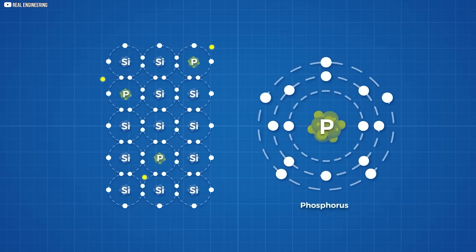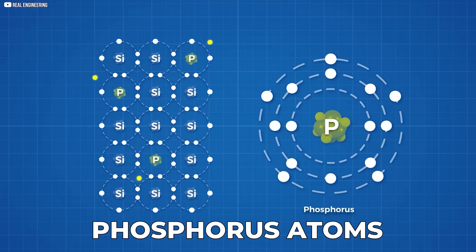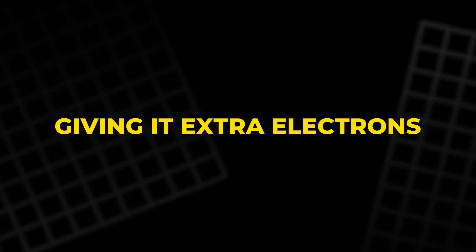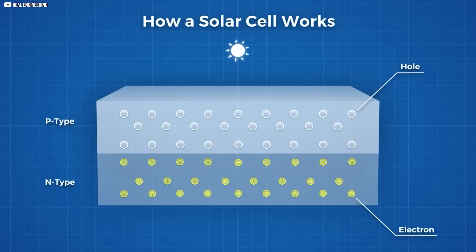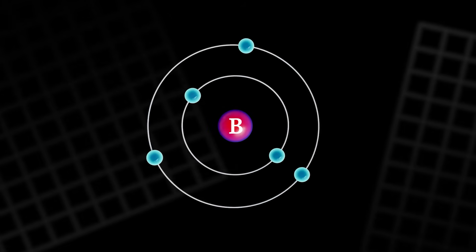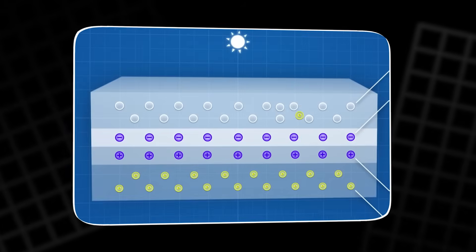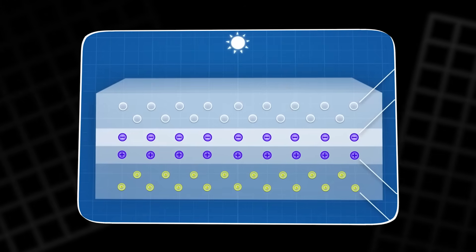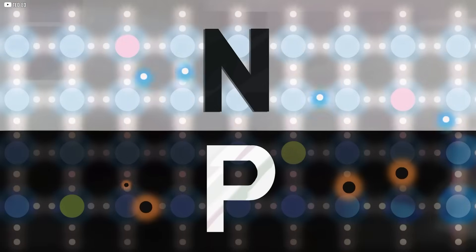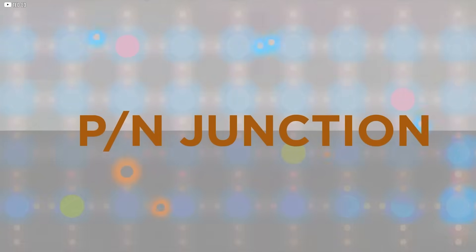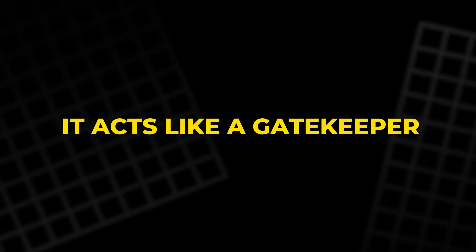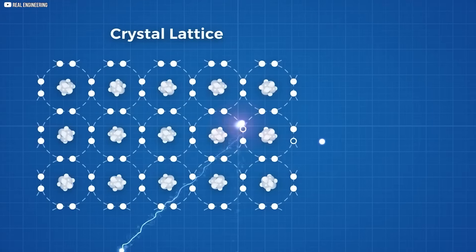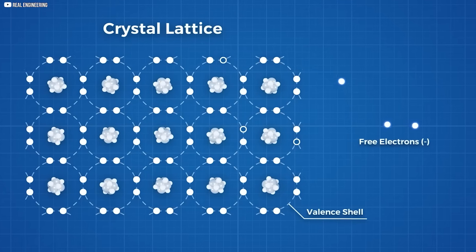Manufacturers treat one layer of silicon with phosphorus atoms, giving it extra electrons. This becomes the n-type layer, rich with negative charge carriers. The other layer gets mixed with boron atoms, creating an area with missing electrons, or holes, called the p-type layer. Where these two layers meet is the real action zone, the p-n junction. This boundary creates an invisible electric field. It acts like a gatekeeper, making it difficult for electrons to cross from one side to the other without help.